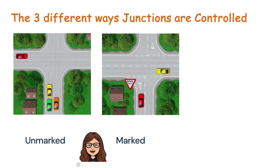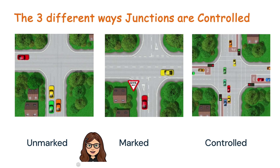Marked junctions are guided by road markings and signs. These markings provide instructions on who has the right of way and how to navigate the junction. Lastly, traffic-controlled junctions are controlled by traffic lights and are common in busy areas. The lights dictate when you can proceed and when you must stop.